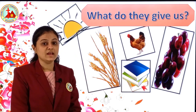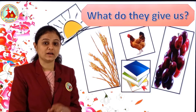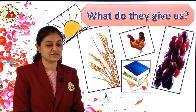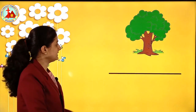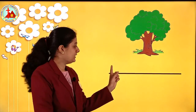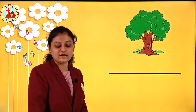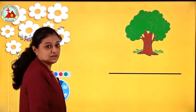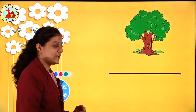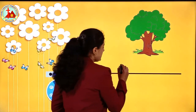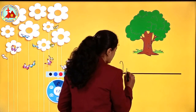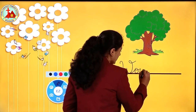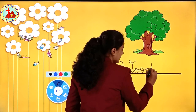In your general knowledge book you have been given a picture and below that a space to write. See here like this — tree is given and below that there is a space for writing also. So do you all know what do trees give us? Trees give us wood.